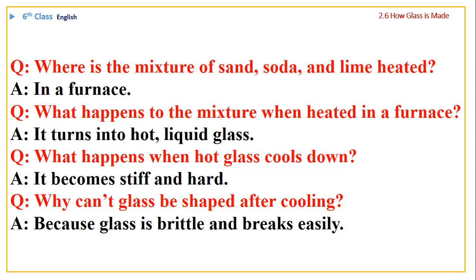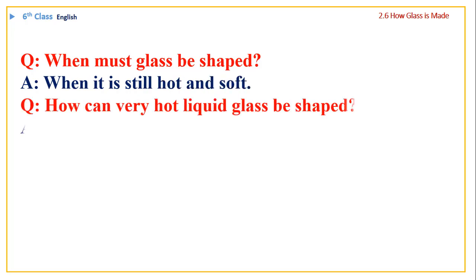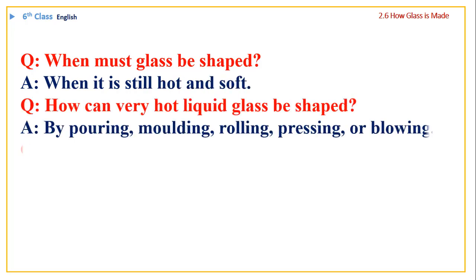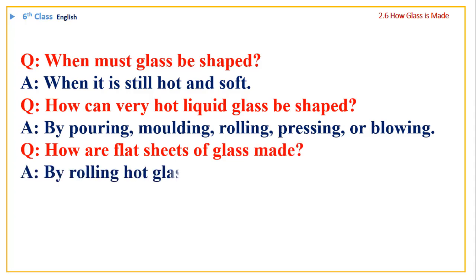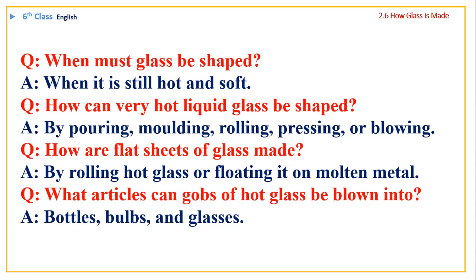Why can't glass be shaped after cooling? Because glass is brittle and breaks easily. When must glass be shaped? When it is still hot and soft. How can very hot liquid glass be shaped? By pouring, molding, rolling, pressing, or blowing.